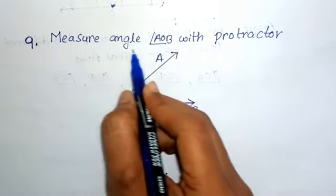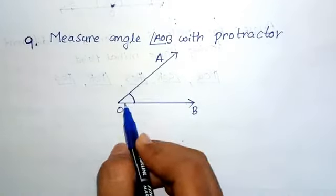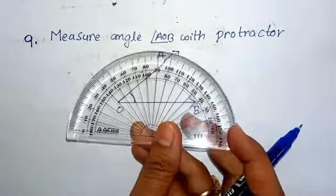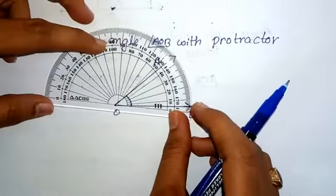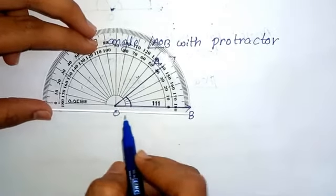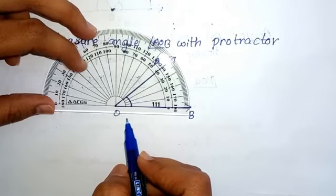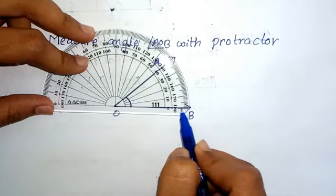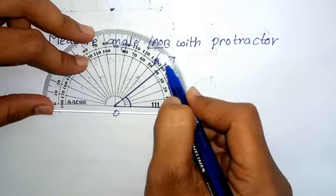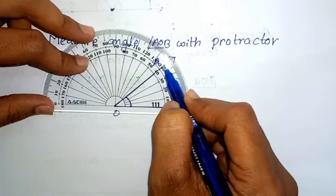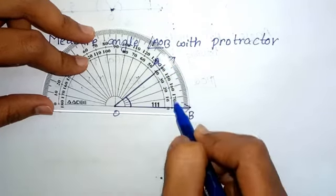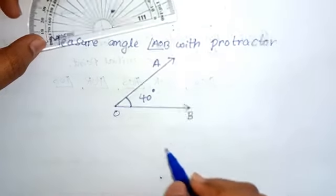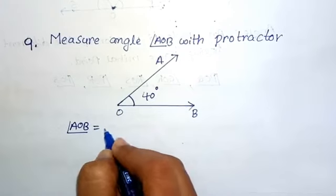Problem nine: measure angle AOB with a protractor. Place the protractor exactly at point O. The horizontal line is at 0 degrees. Ray OA is at 40 degrees, so from 0 to 40 degrees — angle AOB equals 40 degrees.